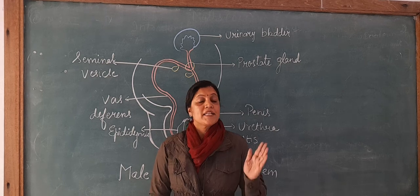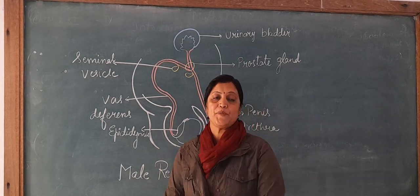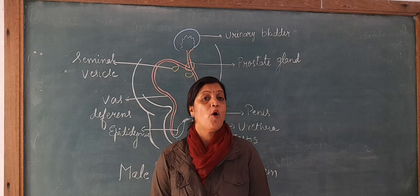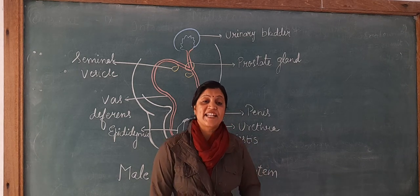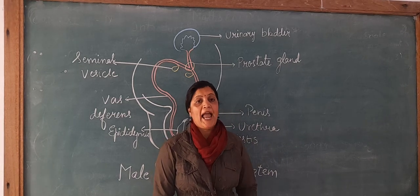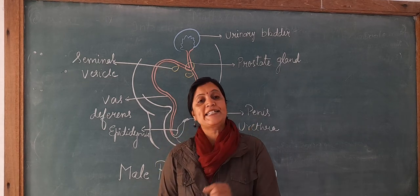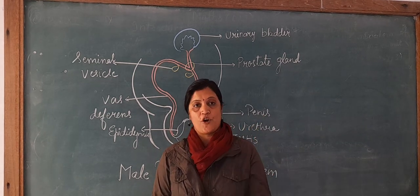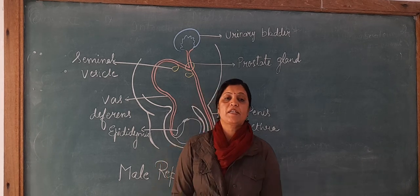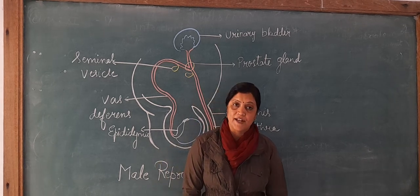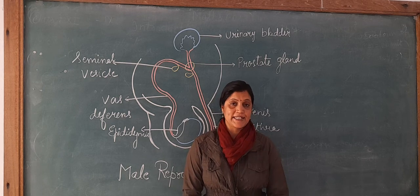Some different changes occur due to male and female reproductive system hormones. In males, the testis releases testosterone hormone, and in females the ovary releases estrogen and progesterone hormones. These hormones are responsible for developing secondary sexual characters in males and females.